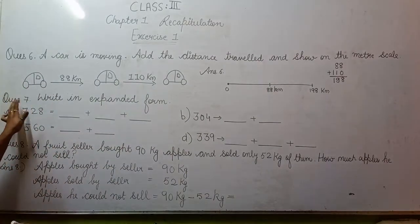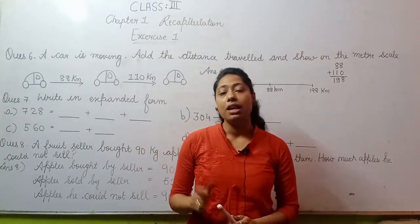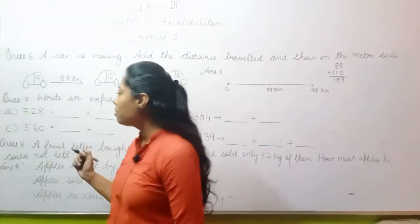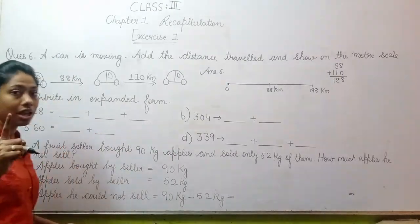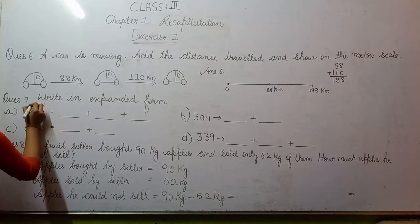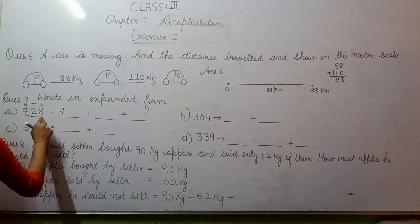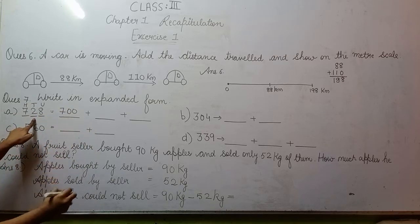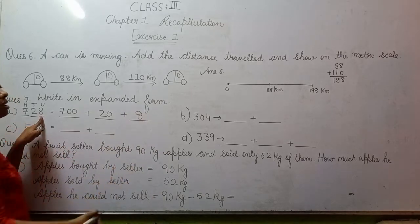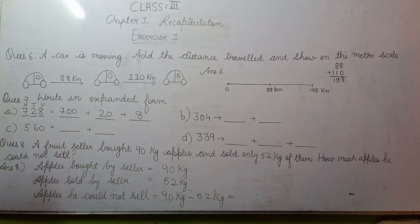Now moving to question number 7. Question number 7 says write an expanded form. You have to expand and write. Similar question we did in the previous lecture. How to expand? First check the place values here. I told you - this is your unit place, this is tens place, and this is hundreds place. First you write hundreds place and for remaining places you put 0. Then write tens place and put 0 for remaining. And last ones place is 8. So 700 plus 20 plus 8, this is your expanded form for question A.